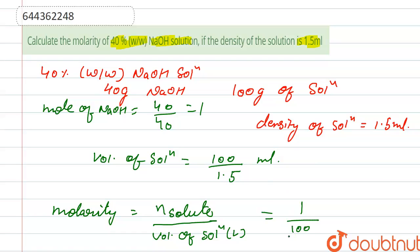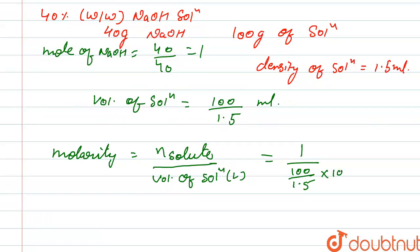And volume of solution is 100 upon 1.5, but it is in mL, so we convert to liters by multiplying by 10 to the power minus 3. This gives us 1.5 upon 100 into 1000. From here it cancels out and gives 15 M molarity.